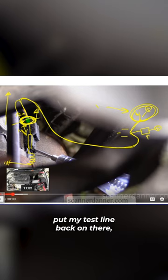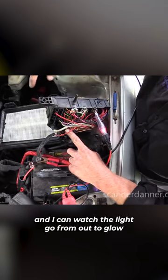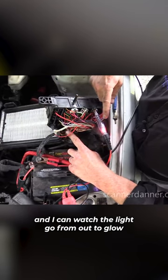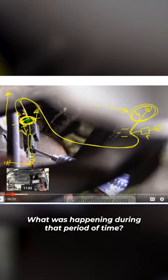Pull the power probe off, put my test light back on there. The resistance is so high I won't even light the bulb on my test light. Leave the test light there and I can watch the light go from out to glow, brighter, brighter, brighter. What was happening during that period of time?